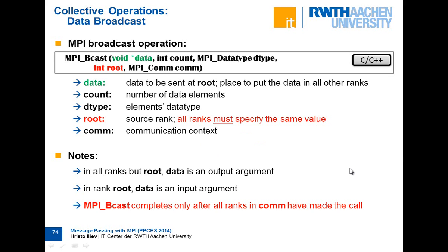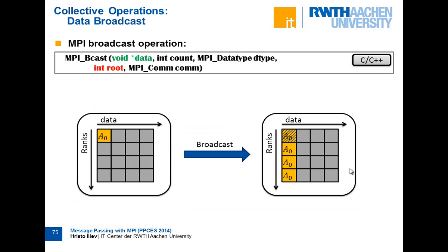With collective operations we can draw diagrams like this. Initially the data buffer exists only at rank zero. After the broadcast, this data is replicated in all processes — all their buffers contain the data which was initially only at rank zero. This is the broadcast: a very simple operation.